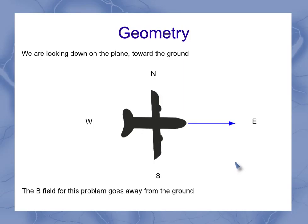In this problem, the B field goes away from the ground. And since we're looking down towards the ground, that means the B field is out of the screen. So we can show that as our series of dots.